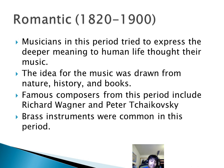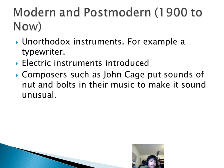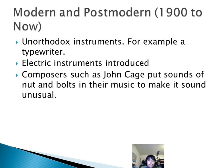Famous composers from the Romantic period include Richard Wagner and Peter Tchaikovsky, who was very famous. Brass instruments became very common for the first time in this period. In the modern and postmodern period, from 1900 to now, unorthodox instruments were introduced — for example, a typewriter. Electric instruments appeared, and composers such as John Cage incorporated sounds of nuts and bolts in their music to make it sound unusual.